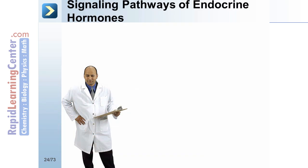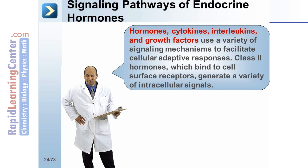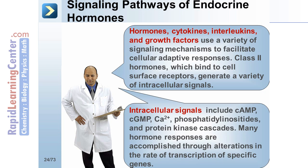Hormones, cytokines, interleukins, and growth factors use a variety of signaling mechanisms to facilitate cellular adaptive responses. Class II hormones, which bind to cell surface receptors, generate a variety of intracellular signals. These include cyclic AMP, cyclic GMP, calcium, phosphatidyl inositides, and protein kinase cascades. Many hormone responses are accomplished through alterations in the rate of transcription of specific genes.